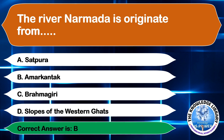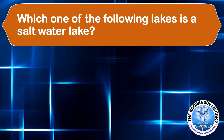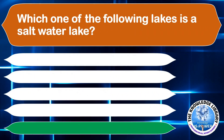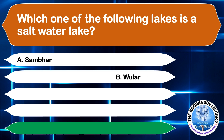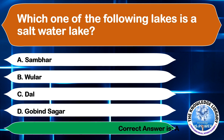Which one of the following lakes is a saltwater lake? A. Sambhar, B. Wular, C. Dal, or D. Gobind Sagar. The correct answer is option A, Sambhar.